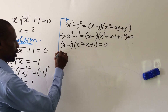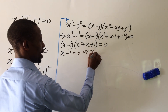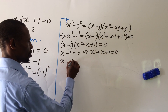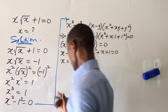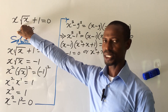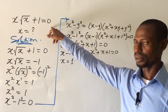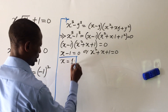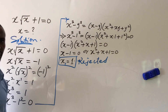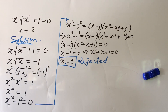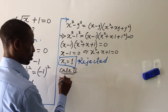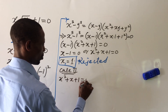If we apply the zero product rule, that means x minus 1 equal to 0, or x squared plus x plus 1 equal to 0. From the first factor, we get x equal to positive 1. But for this case, if we plug positive 1 into our equation, it's not going to give us 0. So this answer is rejected. We reject x equals 1 because it must satisfy our equation. So we go to our case 2: x squared plus x plus 1 equal to 0.